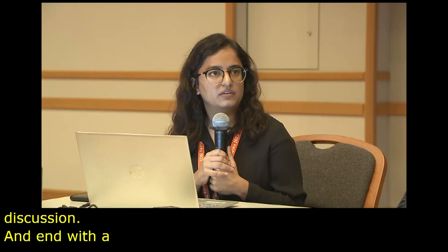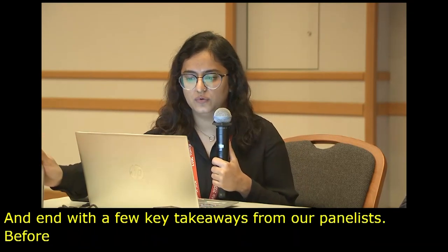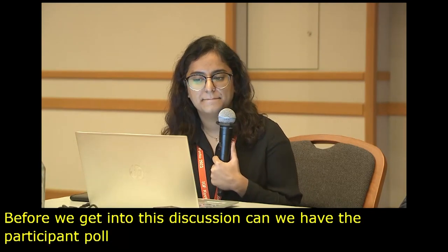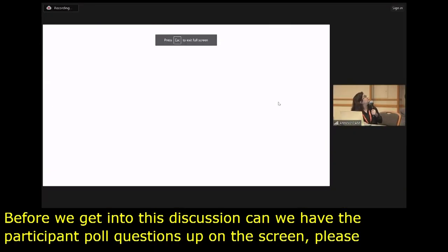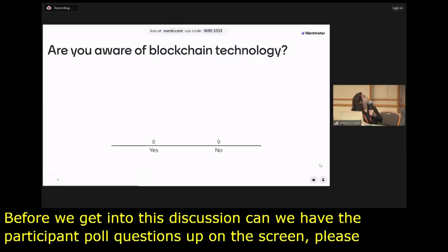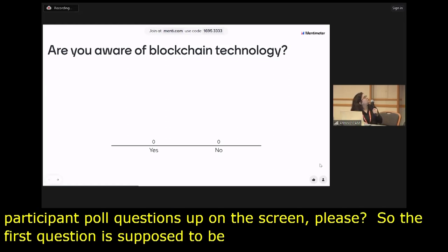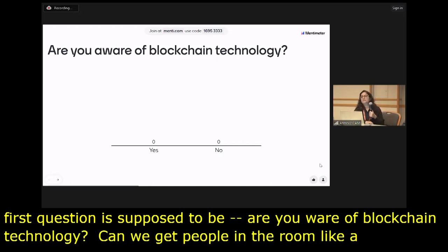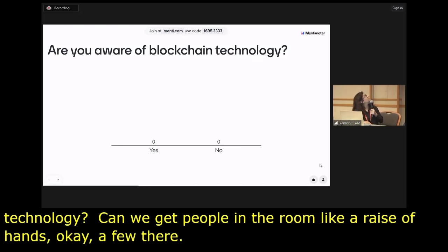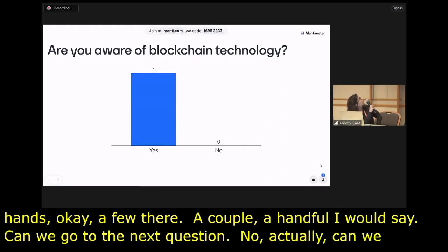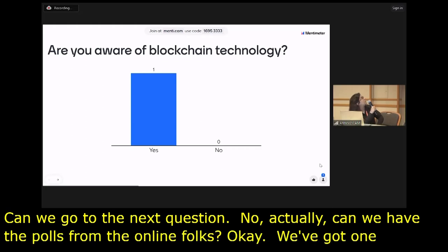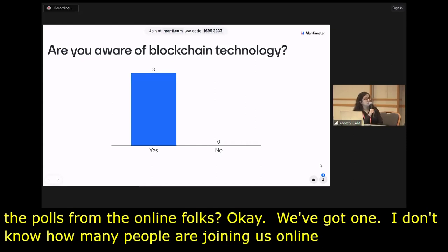Before we get into the discussion, can we have the participant poll questions up on the screen? The first question is: are you aware of blockchain technology? A handful of hands went up in the room, and we've got one person online. Can we go to the next question? Do you have a digital identity? A couple of hands from the room. And we've got four people online — a good number of people who know and have a digital identity.